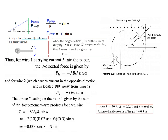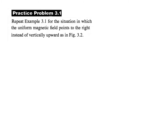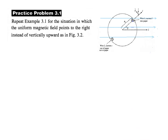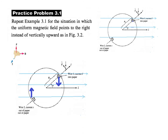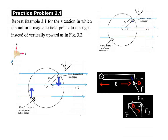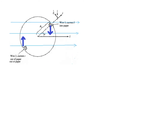Next is practice problem 3.1: repeat example 3.1 for the situation where the uniform magnetic field points to the right instead of vertically upward. The rotor remains the same but the field now points horizontally to the right. Applying the right-hand rule, we find this side's force goes up and the other side's force goes down.